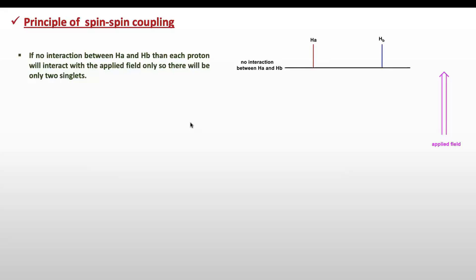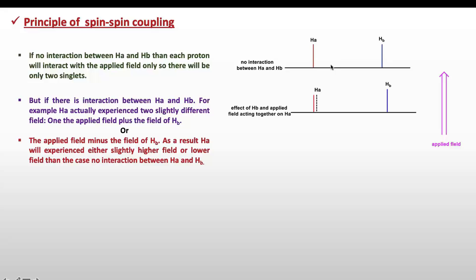Now what is the principle of spin-spin coupling? Let's take the example of two protons H_a and H_b. If there is no interaction between H_a and H_b, then each proton will interact with the applied field only, so there will be only two singlets. But if H_a and H_b interact with each other, in the first case the field of H_b is aligned with the applied field, so H_a will experience more field because the field of H_b is added to the applied magnetic field. The gap between the two energy states of H_a will slightly increase, moving the peak of H_a slightly to downfield.